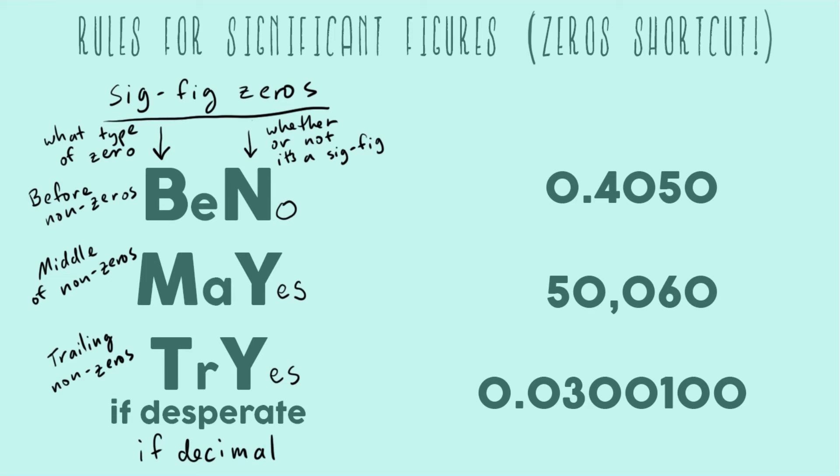And now let's just go over the three examples I have to show you how this mnemonic can work. So on this first example we're going to check off four and five. Those are definitely sig figs because they're not zeros.